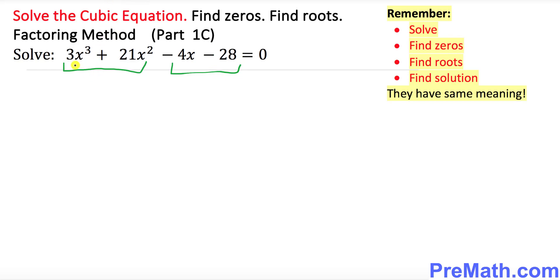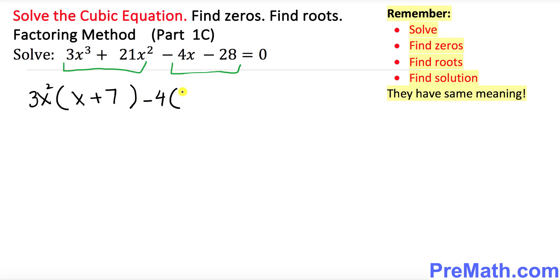In the first part, what is in common between these two terms? The common factor is 3x squared. Once you bring 3x squared outside, what's going to be inside the parentheses? It's going to be x plus 7. Likewise, in the second part, negative 4 is going to factor out, giving x plus 7 equal to 0.